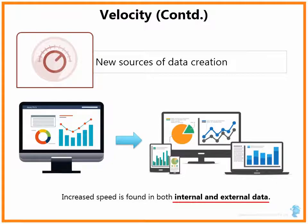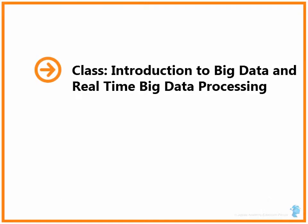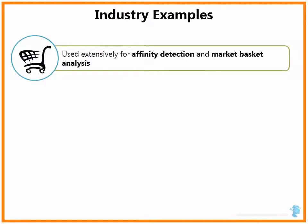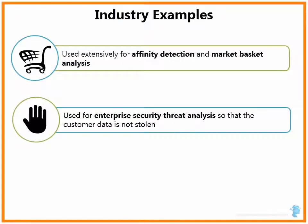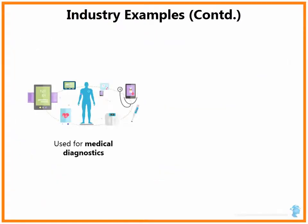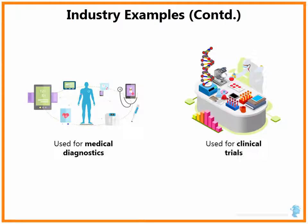Let us now look at some industry examples of Big Data. In the retail industry, Big Data is used extensively for affinity detection and market basket analysis. You might have seen recommendations on e-commerce sites such as 'people who bought this product also bought these other products.' Big enterprises use Big Data analysis for enterprise security threat analysis so that their customer data is not stolen by criminals. Banks want to use Big Data analysis for loan risk minimization. Hospitals want to use this analytics for medical diagnostics. Drug manufacturers want to use it for their clinical trials.